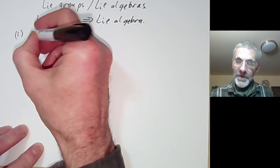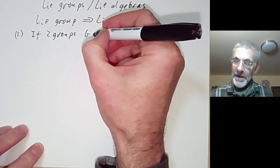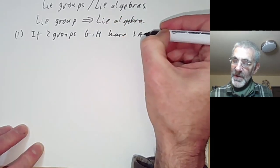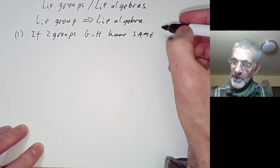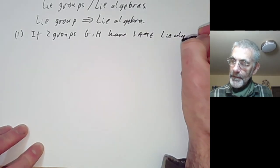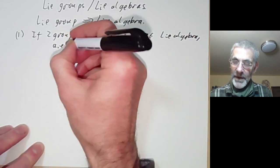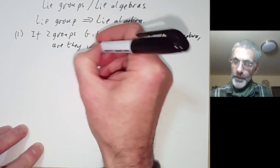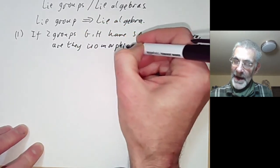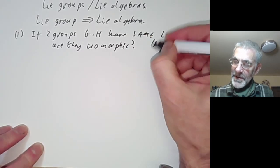If two groups G and H have the same Lie algebra, or at least isomorphic Lie algebras, are they isomorphic? In other words, does the Lie algebra determine the Lie group? And we will see the answer to this is no.